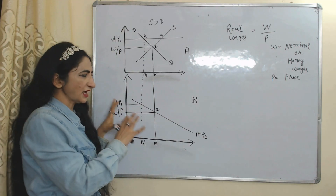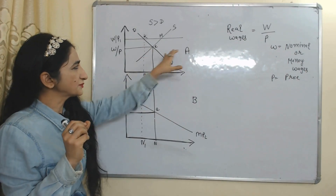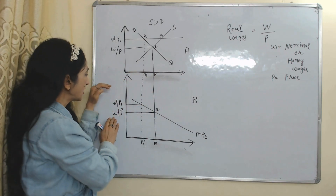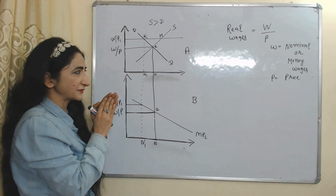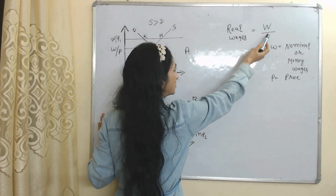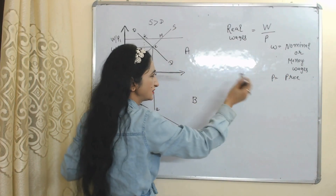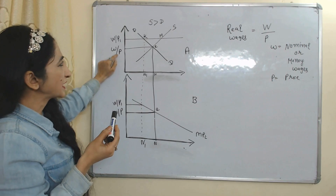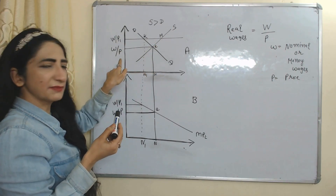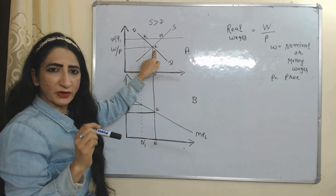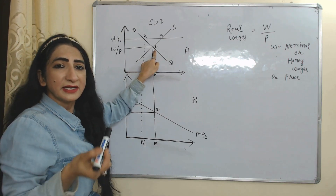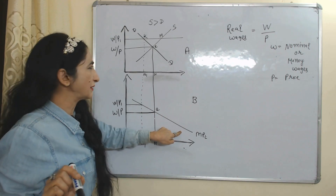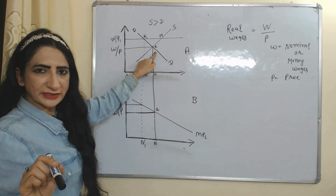So here you can see, reduction in wages and prices could lead to the full employment equilibrium point. Now we understand this theory with the help of a diagram. Here we have two diagrams, A and B, both connected with each other. On the x-axis of both diagrams we have employment, and on the y-axis we have real wage rate. The formula of real wage rate is W over P, where W is nominal money wages and P is price. DD is the labor demand curve, SS is the labor supply curve, E is the full employment point where labor demand equals labor supply, and the MPL curve shows the marginal productivity of labor.